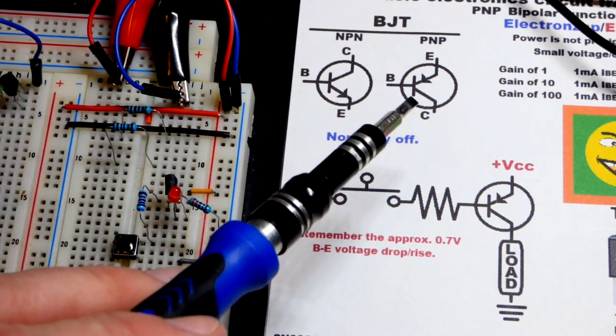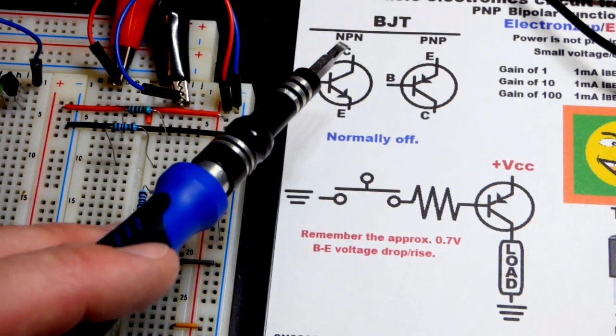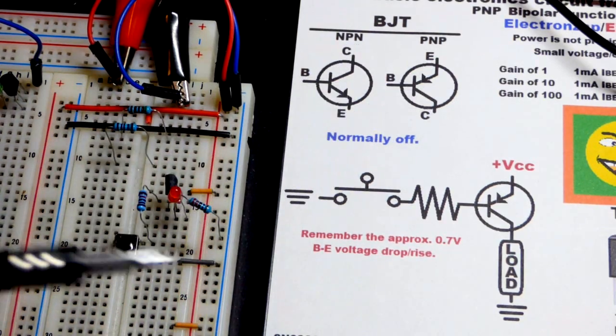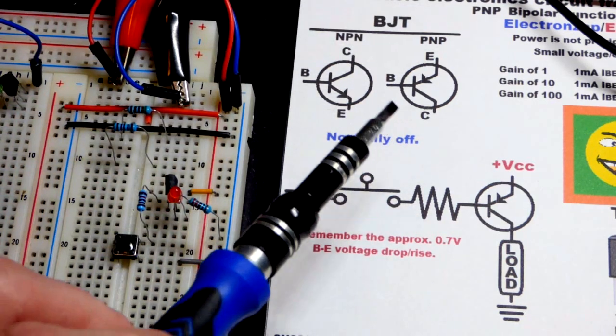The PNP Bipolar Junction is practically the same as an NPN, except their chemistries are opposite. So use them the same way, but with opposite currents and voltages.